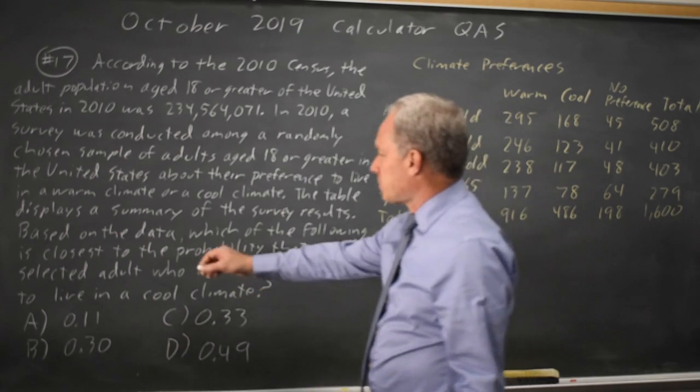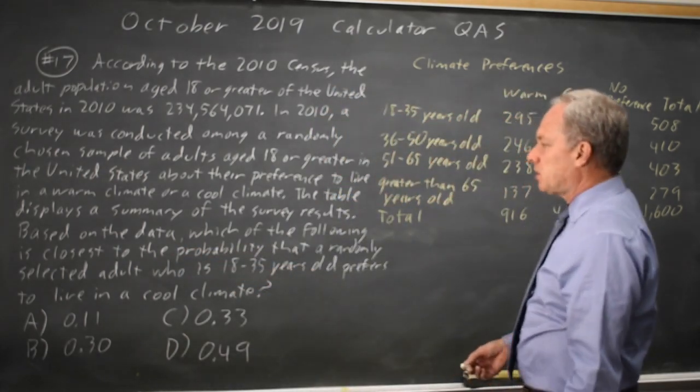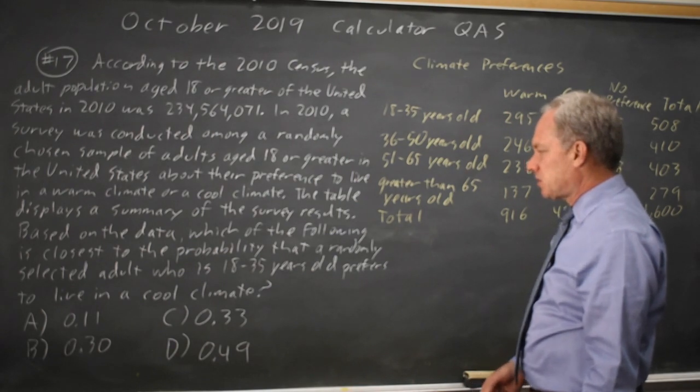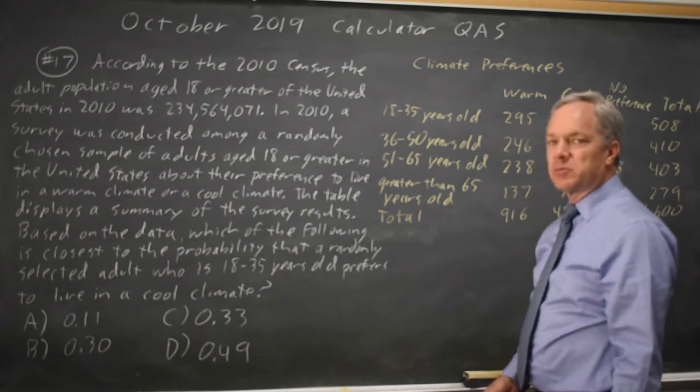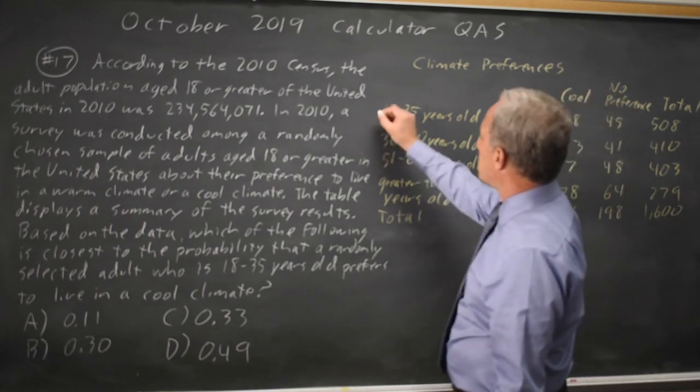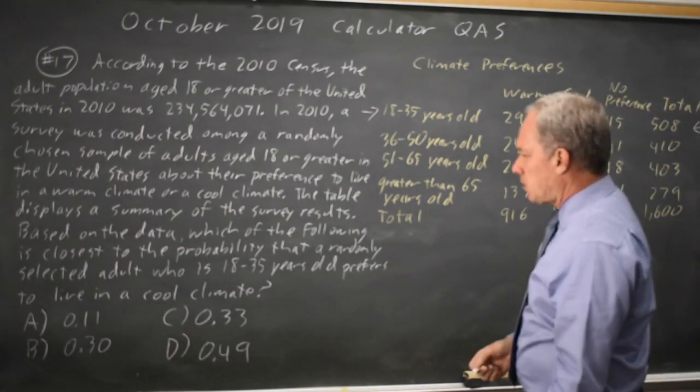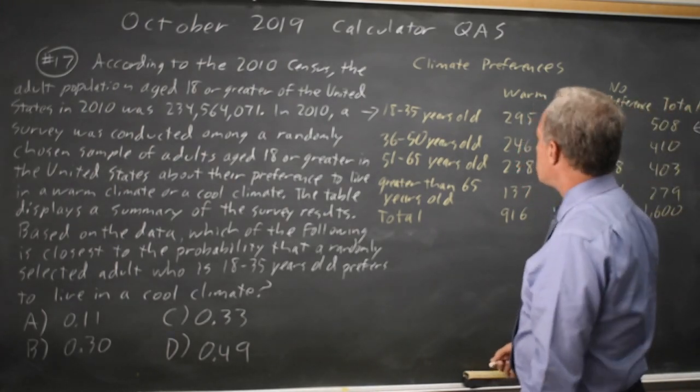It turns out that all that matters here is based on the data, which of the following is the closest to the probability that a randomly selected adult who is 18 to 35 years old prefers to live in a cool climate. So that is saying of those who are 18 to 35 years old, this first row, what fraction prefer a cool climate?